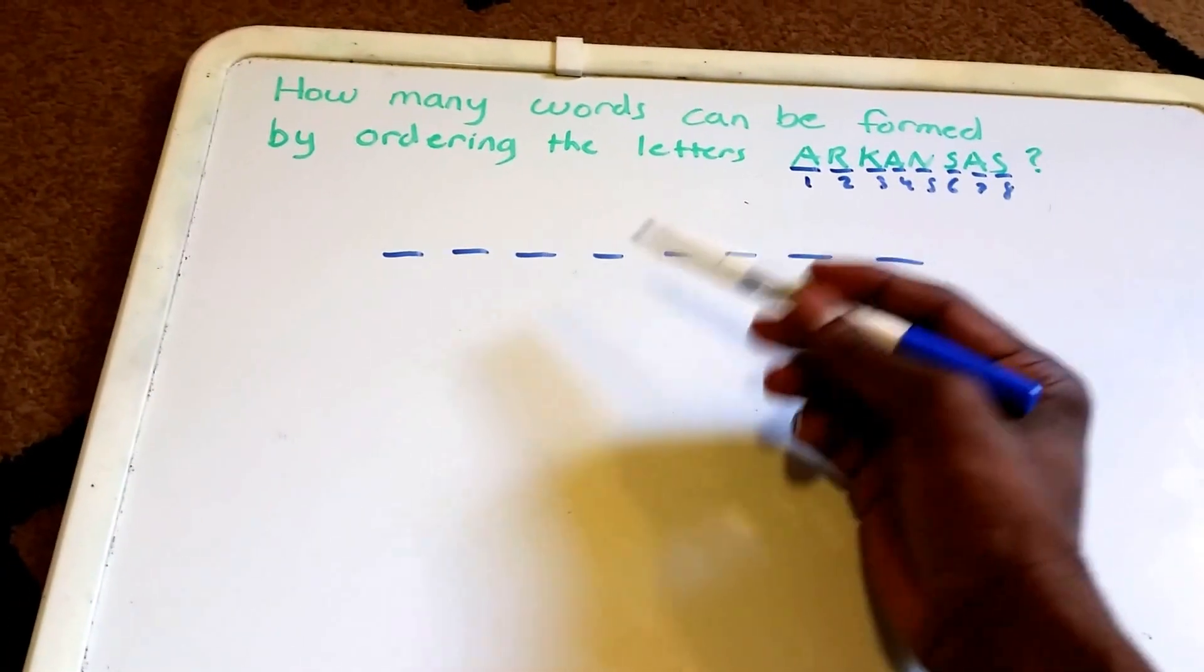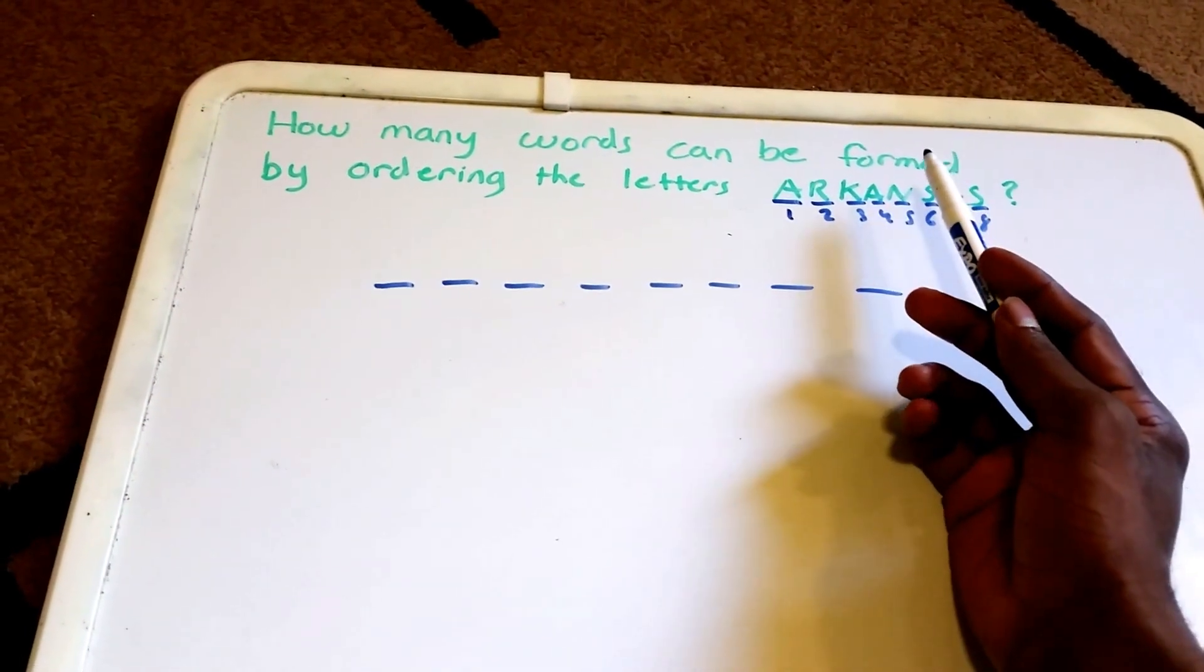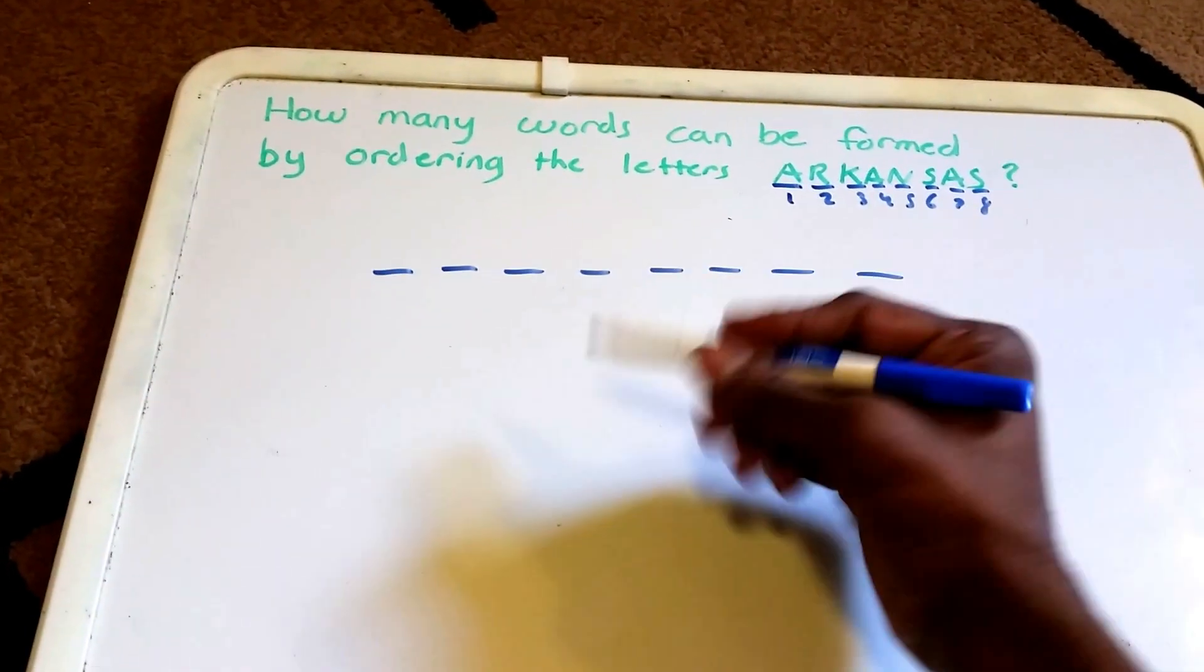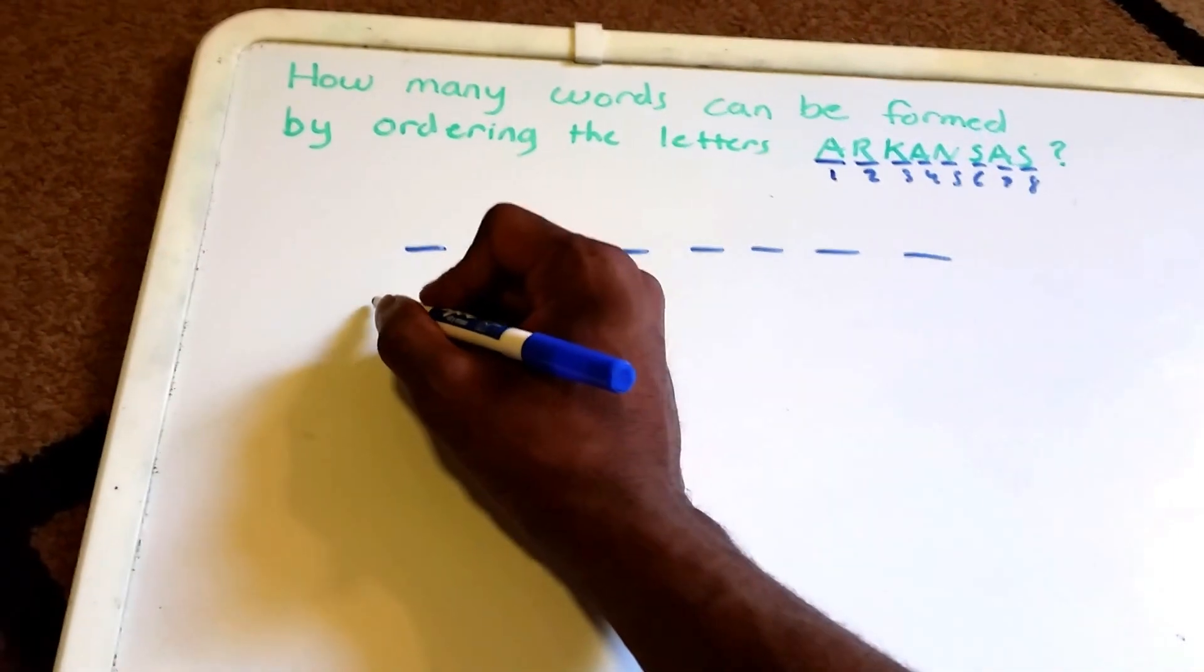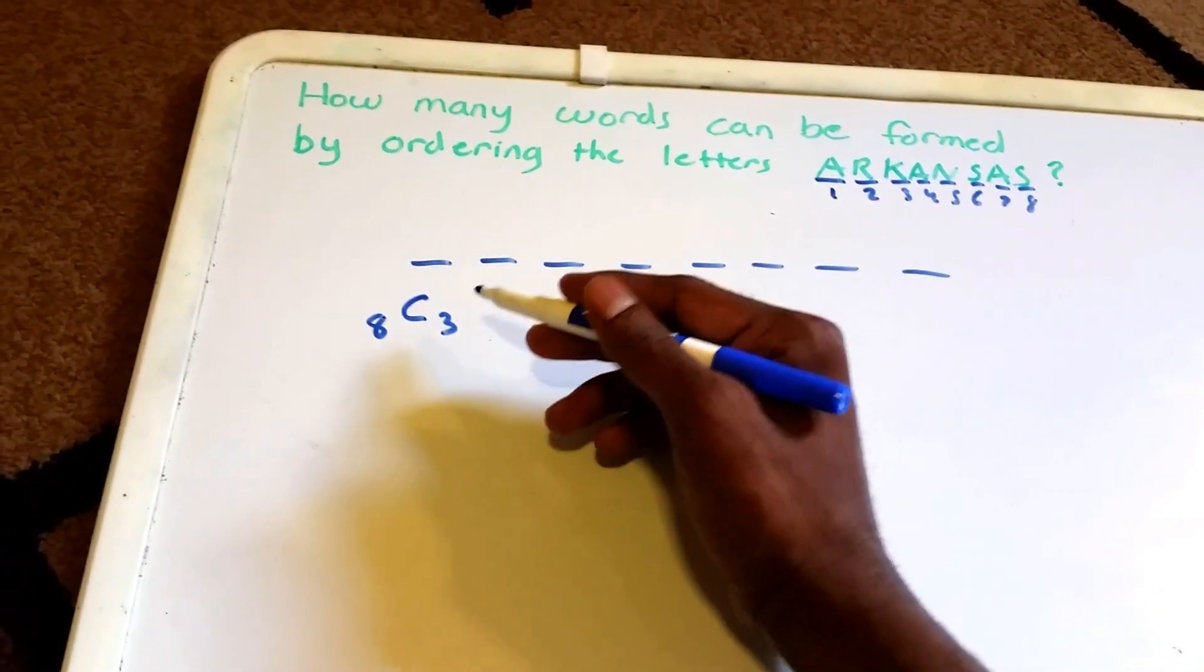First thing we need to do is figure out how we want to place the three A's in any three of the eight positions. We could do that using this notation, which is 8 C 3.